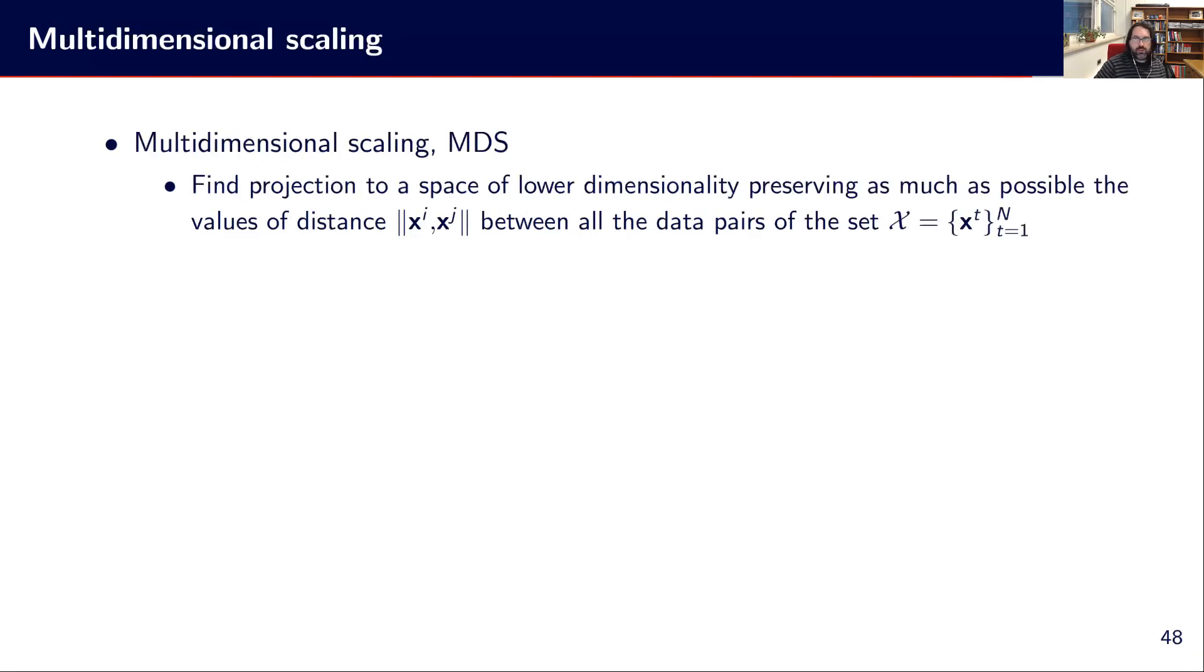One approach for that is what we call multidimensional scaling, MDS. So the idea is to find a projection to a space of lower dimensionality, while preserving as much as possible the value of the distance. We don't look at the position, we look at the distances between each pair of points of the training set. So we want to map this while preserving the distance relation between the points.